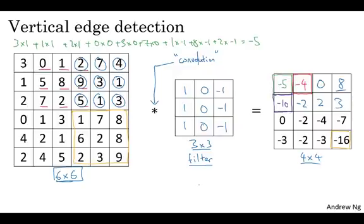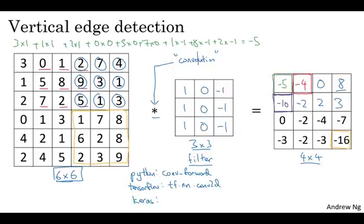Before going on, one other comment: if you implement this in a programming language, in practice most programming languages will have some different function rather than an asterisk to denote convolution. For example, in the programming exercise you implement a function called conv_forward. If you do this in TensorFlow, there's a function tf.nn.conv2d, and in the Keras programming framework, which you'll see later in this course, there's a function called conv2d that implements convolution. All the deep learning frameworks that have good support for computer vision will have some function for implementing this convolution operator.